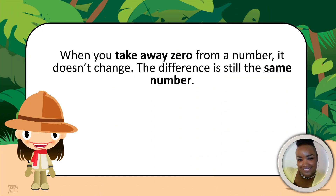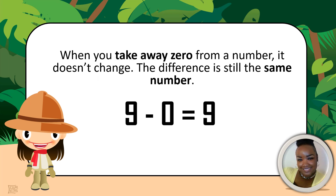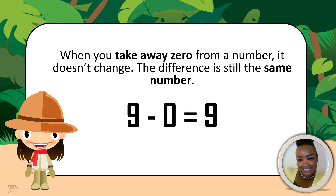When you take away 0 from a number, it doesn't change. The difference is still the same number. Here's an example: 9 take away 0 equals 9. As you can see, even though we subtracted 0, our difference was still 9. Here are some more examples.